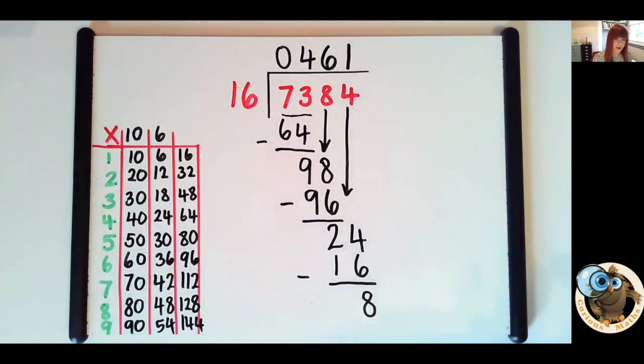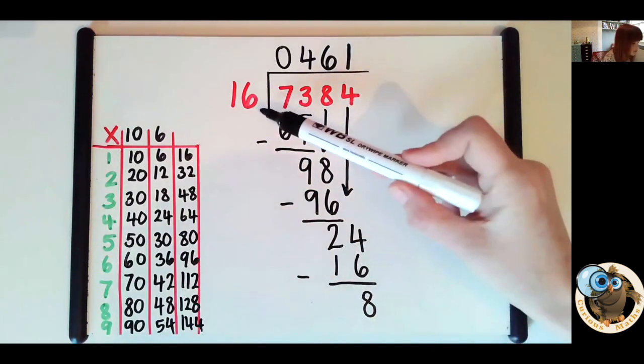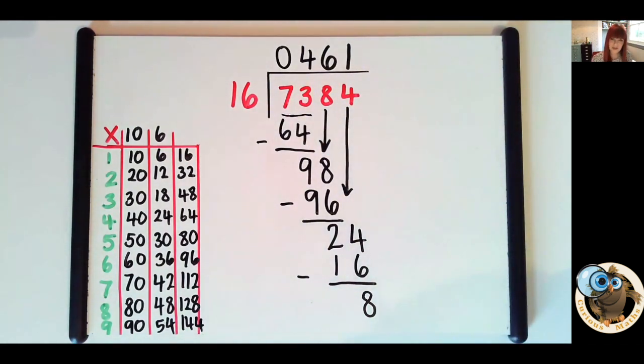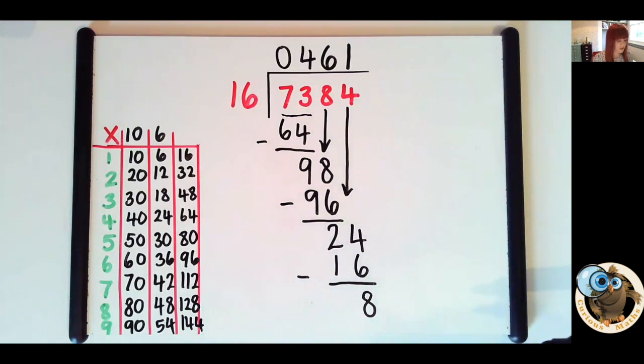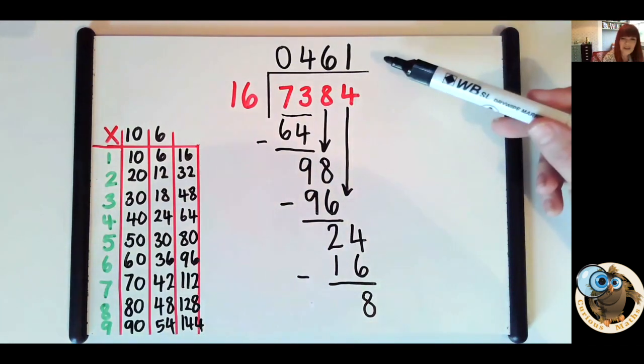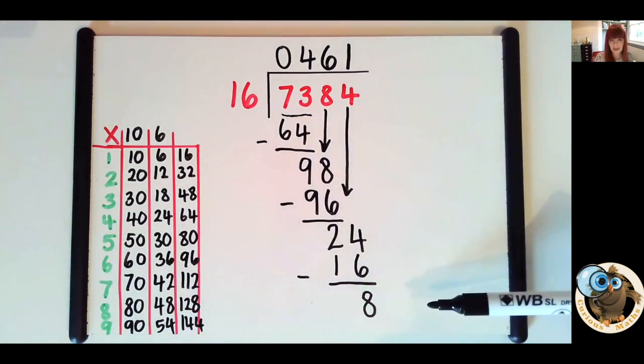Now with all the earlier questions we did with no remainder, we always got a zero and we're always heading to zero. With remainders, we are still heading for zero, but sometimes we can't get there. So as you can see, I've got 8 remaining, but I need to put them into groups of 16 because I'm dividing by 16. So I can't share, if I'm thinking about a whole number answer, I can't share that equally. So if it was balls, let's say there were 7,384 beach balls shared between 16 people, they'd have 461 each, and there'd be 8 left over.